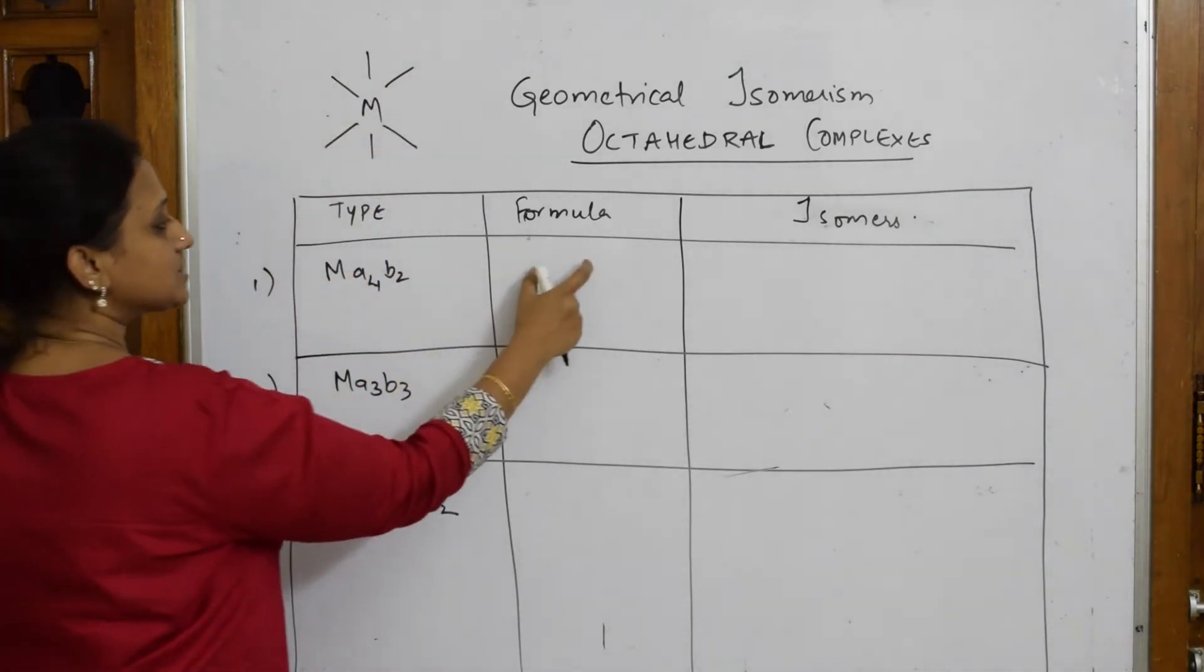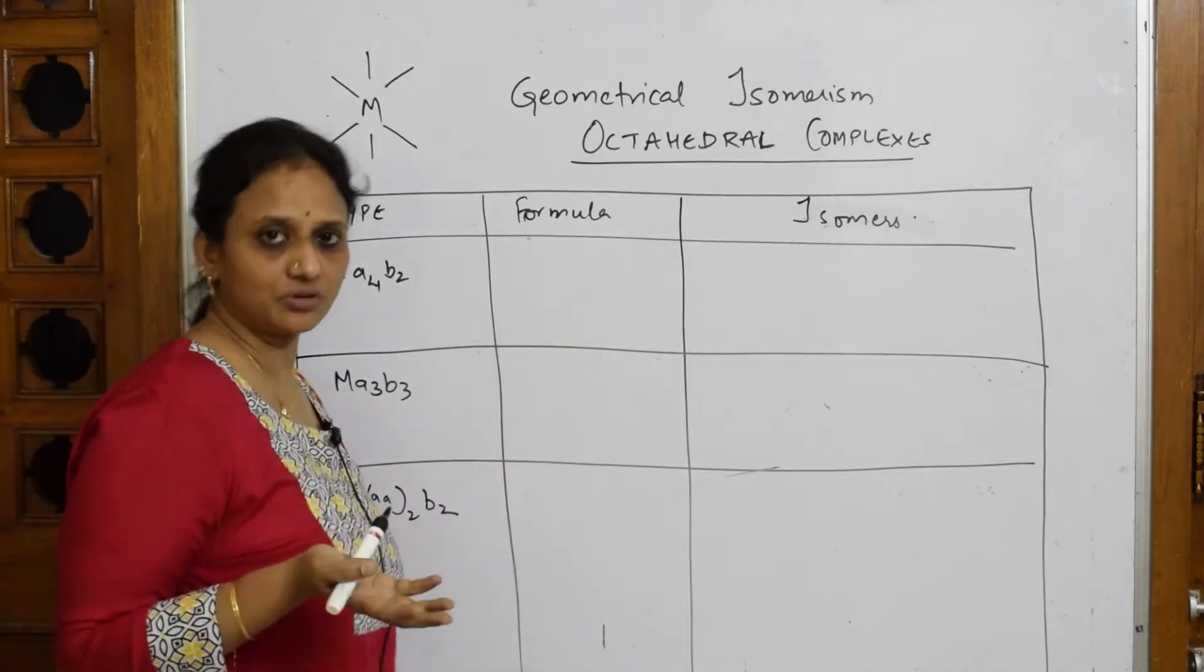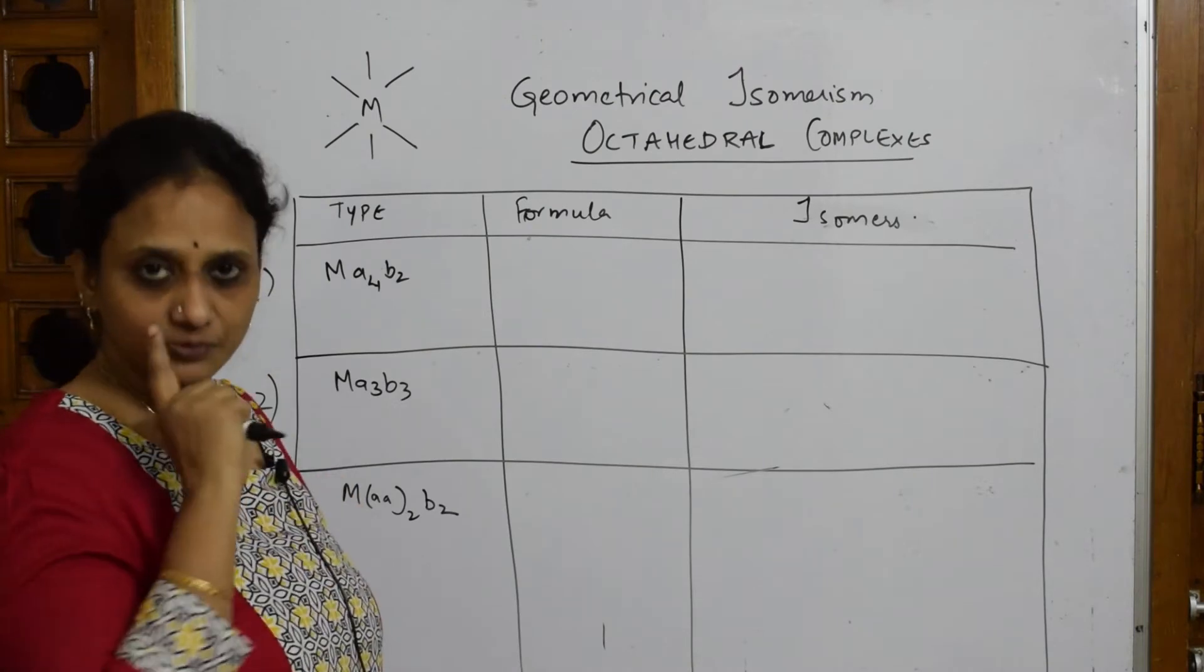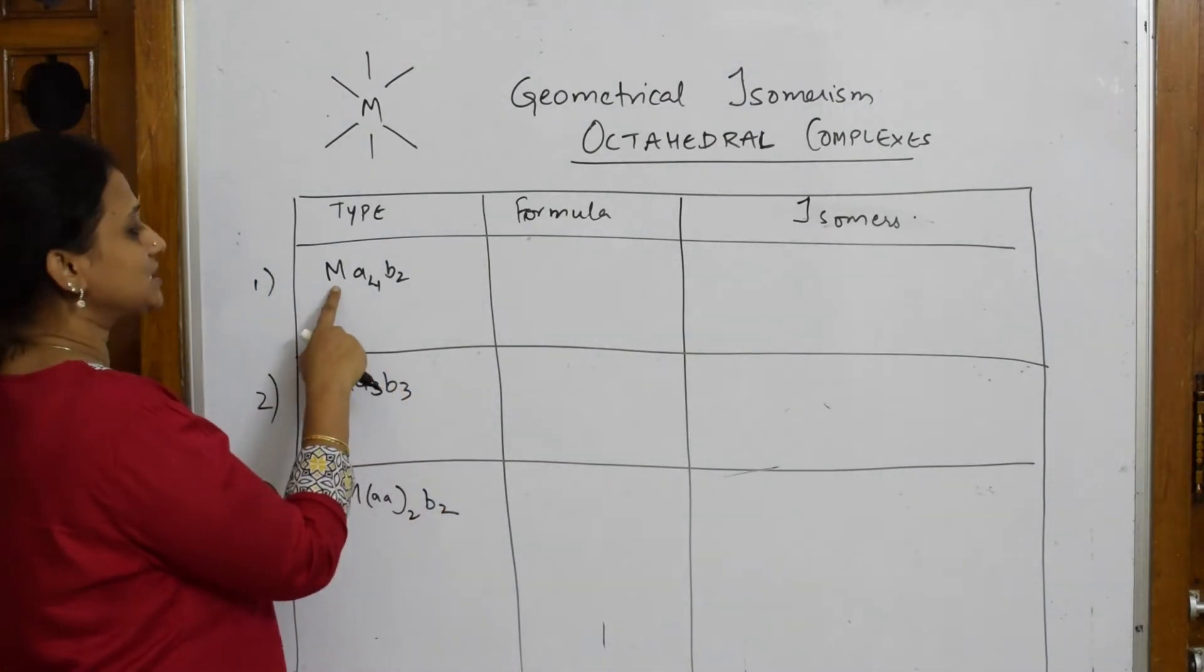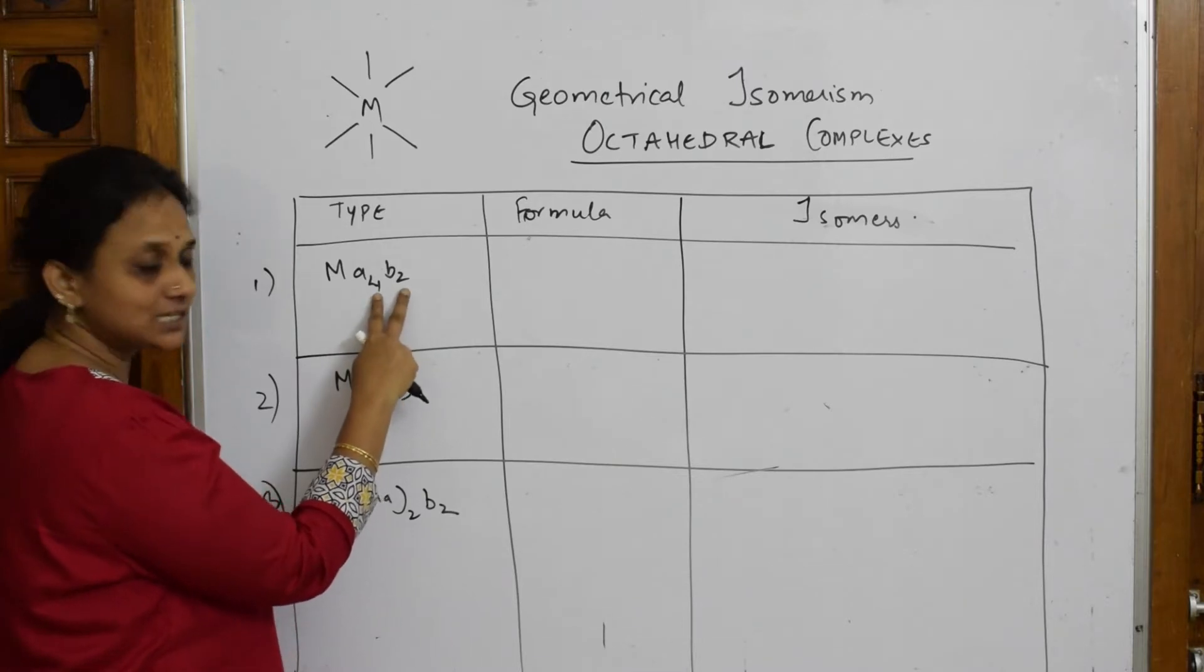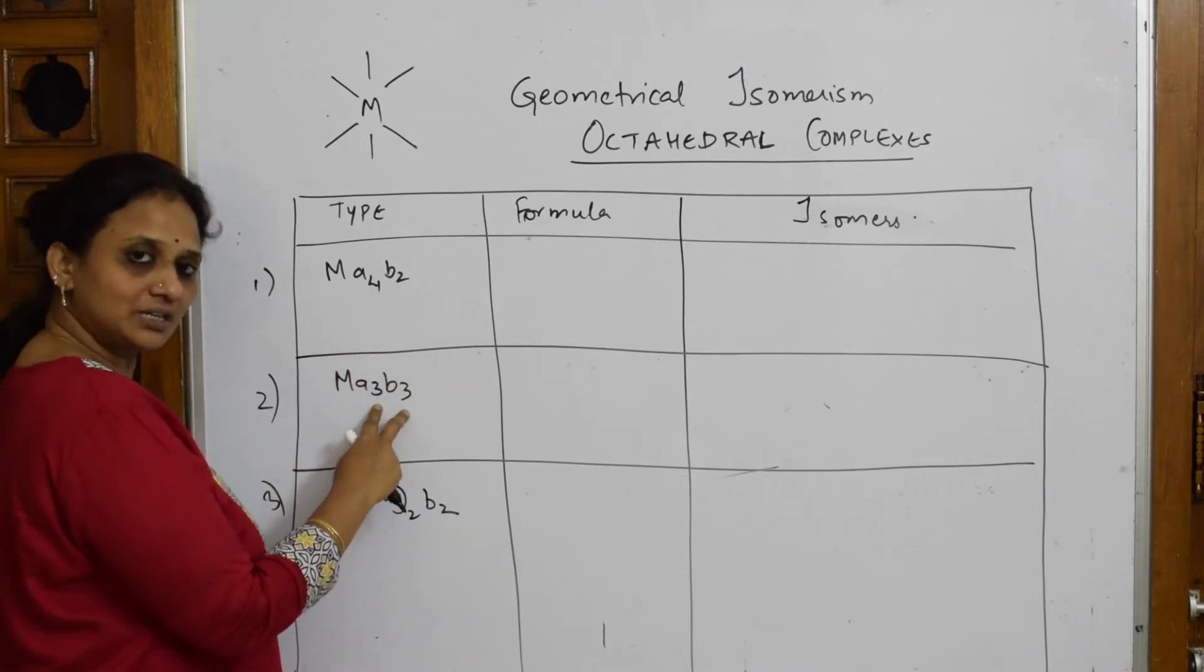So, octahedral geometry. Whichever structure you draw, draw it in that structure that the geometry should be followed. Otherwise, you'll not be given marks for that. So remember. Now this is M metal atom with A4 and B2. Just see 4 plus 2, 6. So octahedral. A3, B3, octahedral.